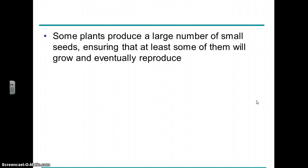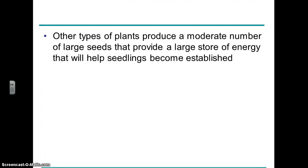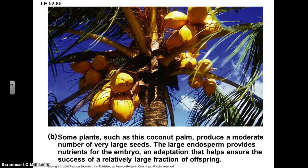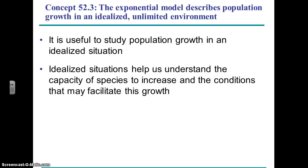A species can produce lots of seeds or offspring, or relatively few. Parental care is going to vary as well — with smaller broods you can give more parental care, and with larger broods you can't give as much.